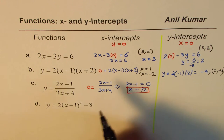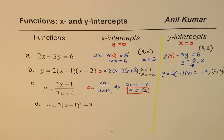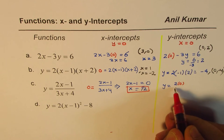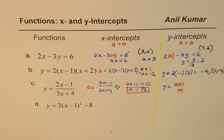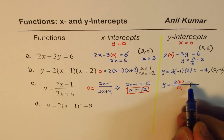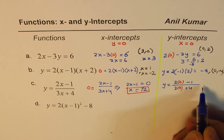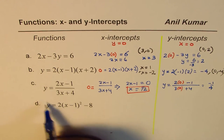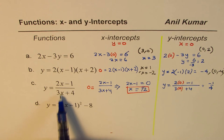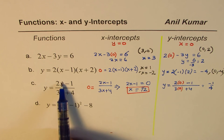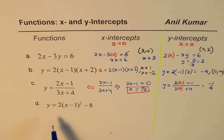To find the y-intercept, substitute x equals 0. We get y equals (2 times 0 minus 1) divided by (3 times 0 plus 4), which gives minus 1 over 4 as the y-intercept. So for rational functions, the x-intercept comes from setting the numerator to 0, giving x equals 1/2, and the y-intercept is found by substituting x equals 0, giving minus 1/4.